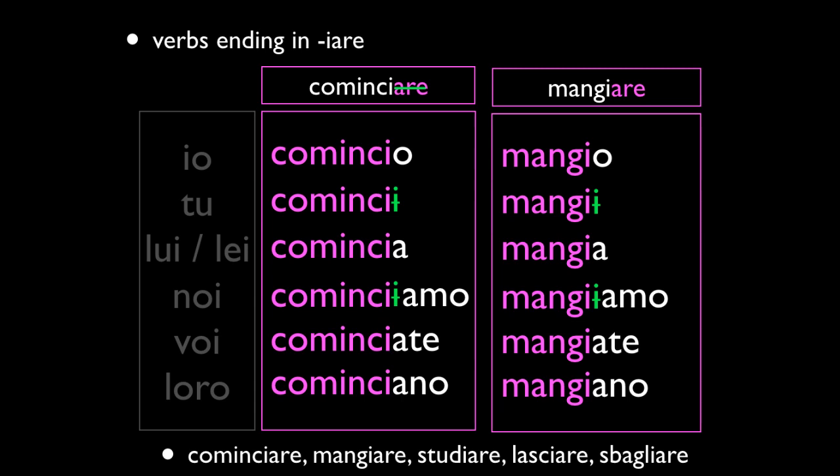You will only double the I in the next class of verbs I'll talk about, because those have a different sound. So for COMINCIARE it goes: COMINCIO, COMINCI, COMINCIA, COMINCIAMO, COMINCIATE, COMINCIANO. Because that second I is not needed, you just get rid of it — that's how you conjugate those. So you don't have to double the I with IARE verbs for the most part. Look at all those at the bottom: COMINCIARE, MANGIARE, STUDIARE, LASCIARE, SBADIGLIARE — don't double the I's in those verbs.